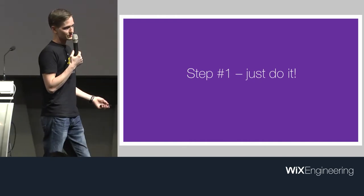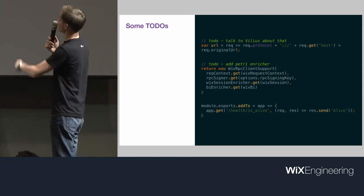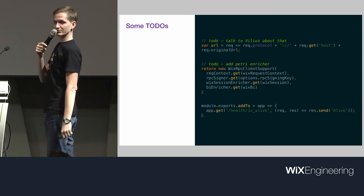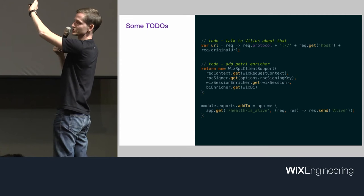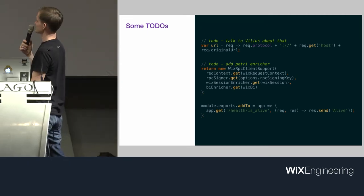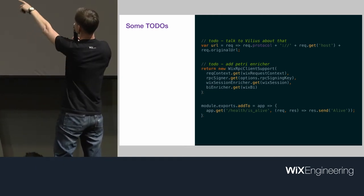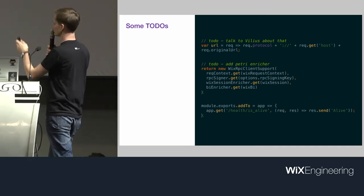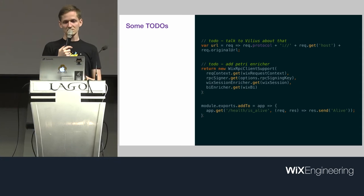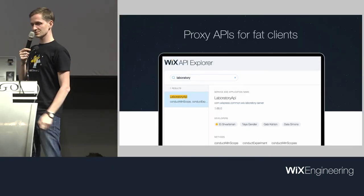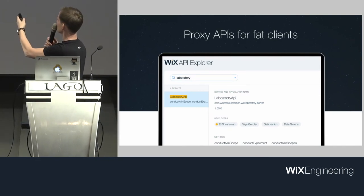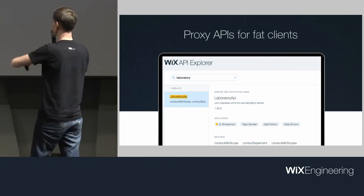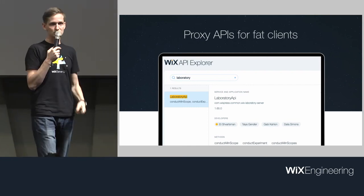When we started there was nothing — just do it. Looking back at about 1,000 commits in history: first there's the RPC which is working but in practice isn't doing all it should, and the health check contract which just says 'alive.' Then we got fat clients wrapped as proxy services — for example, the Petri crew built a laboratory service where they wrapped the fat client, and we could communicate with Petri as an RPC service.